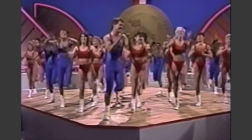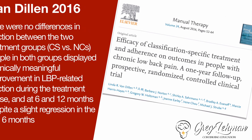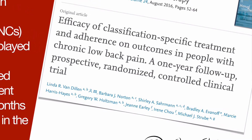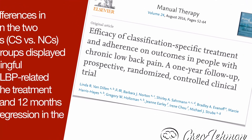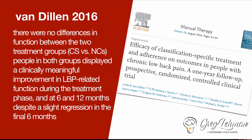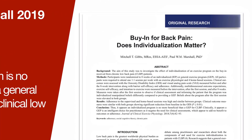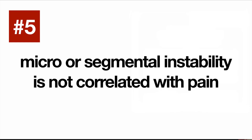Number four: tailoring exercise to unstable joints does not outperform a well-rounded, comprehensive exercise program. This is the kinesiопathological model — great researchers who target movement impairments, what some call instability. We'd like to think that tailoring exercise specific to that person is more effective, but the available research suggests that approach is not more effective than a good well-rounded exercise program. That makes you question: is this really a relevant impairment if you don't have to specifically address it?